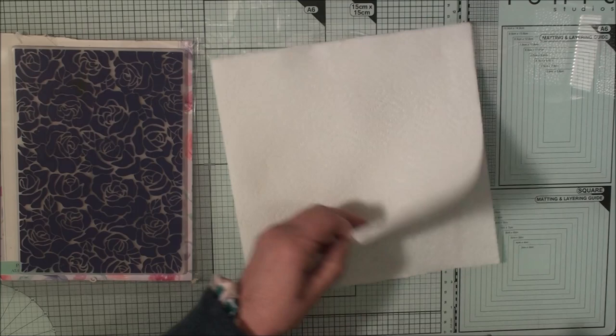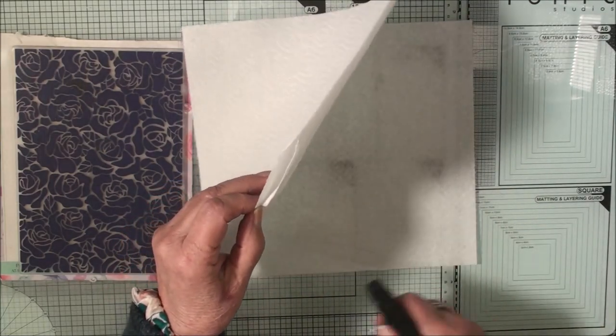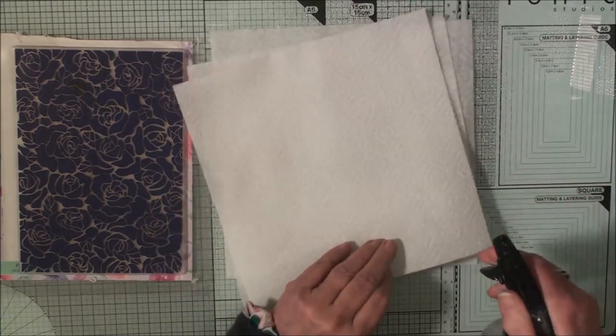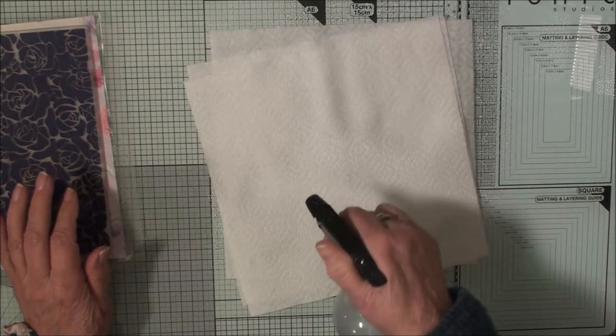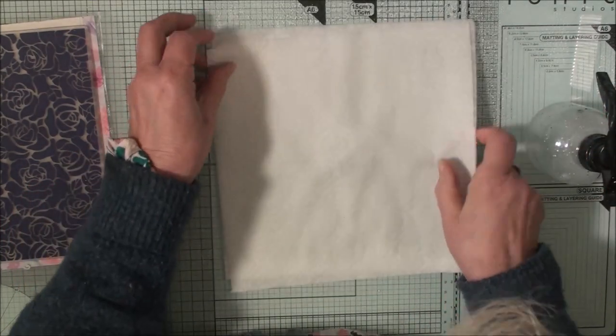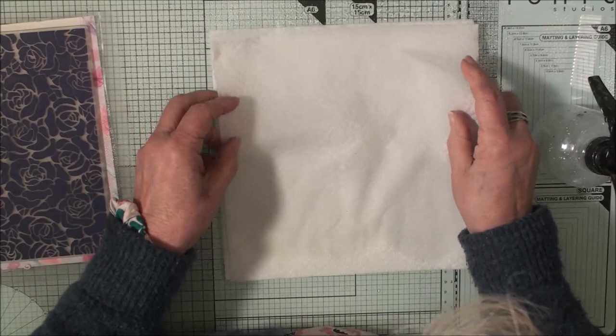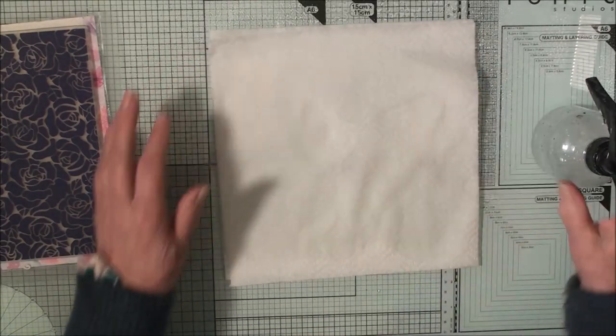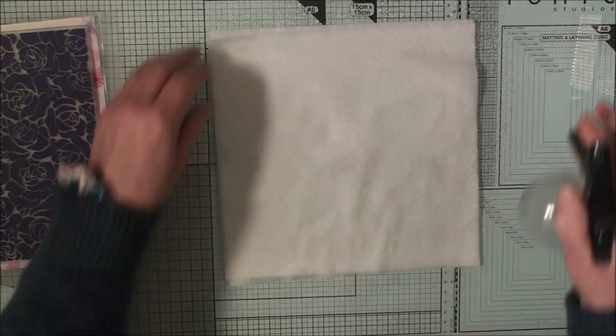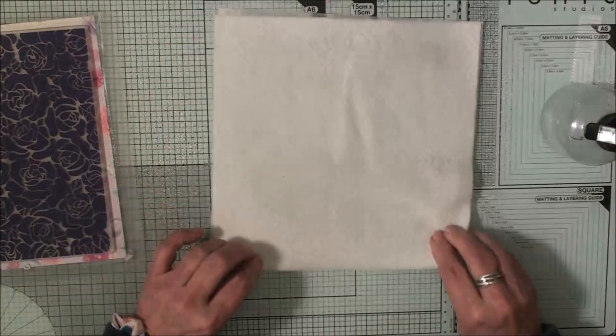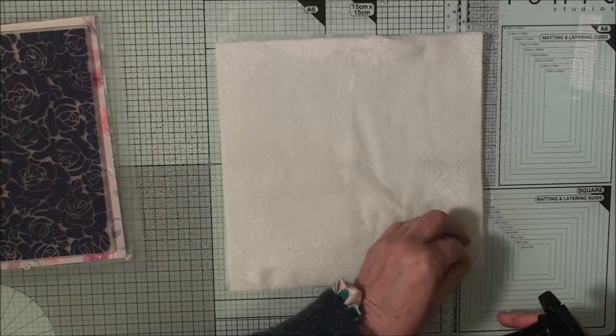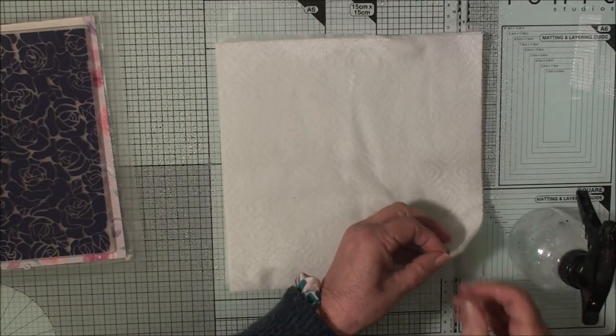So the first thing we're going to do is spritz it on and we're going to make sure that it's all quite wet. Not absolutely soggy, but we want a good amount of water in it, and then we need to make sure that they're all lined up. We've got some dry patches there, we'll just get rid of those. We'll put some water in those.